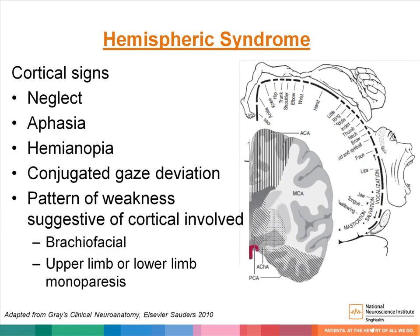Next, we will talk about hemispheric syndrome. The syndrome consists of one or more cortical signs, including neglect, aphasia, hemianopia, and conjugate gaze deviation. Certain patterns such as brachial-facial and upper limb or lower limb monoparesis are specific to cortical infarcts as well, due to the distribution of the motor homunculus along the precentral gyrus. The trunk and lower limb area are supplied by the anterior cerebral artery, whereas the upper limb and face are supplied by the middle cerebral artery.